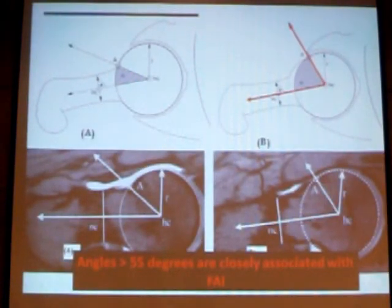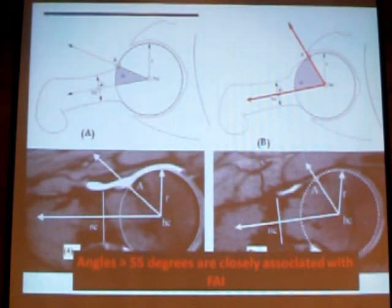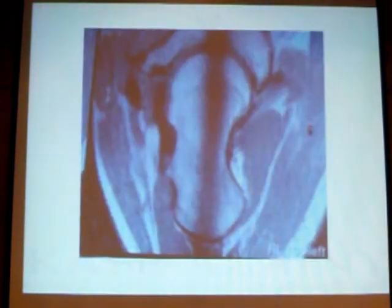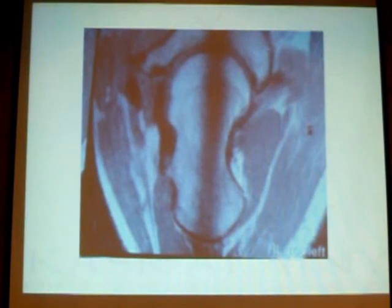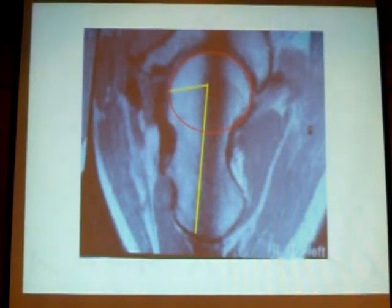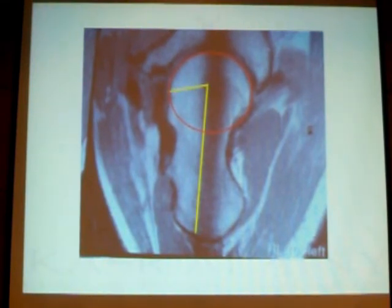The MRI allows us to use the alpha angle, which was suggested by Nötzli, and is positive if it is more than 55 degrees in any cut, corresponding to femoro-acetabular impingement. So if we take the cut here and look at the alpha angle, we find it is more than 90 degrees. The alpha angle is measured by drawing a circle around the femoral head, then a line from the center of the neck, and another line to the point where the head exits the circle. At this cut, the angle is almost 90 degrees.